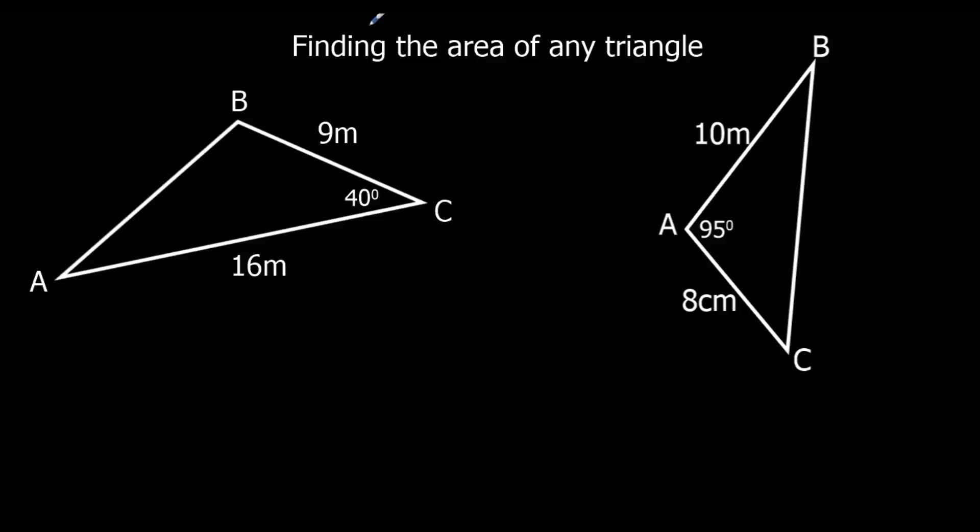Okay, the first one. So we're going to use our formula half a, b, sin C. So we want C to be the angle. This is C and this is a and b.